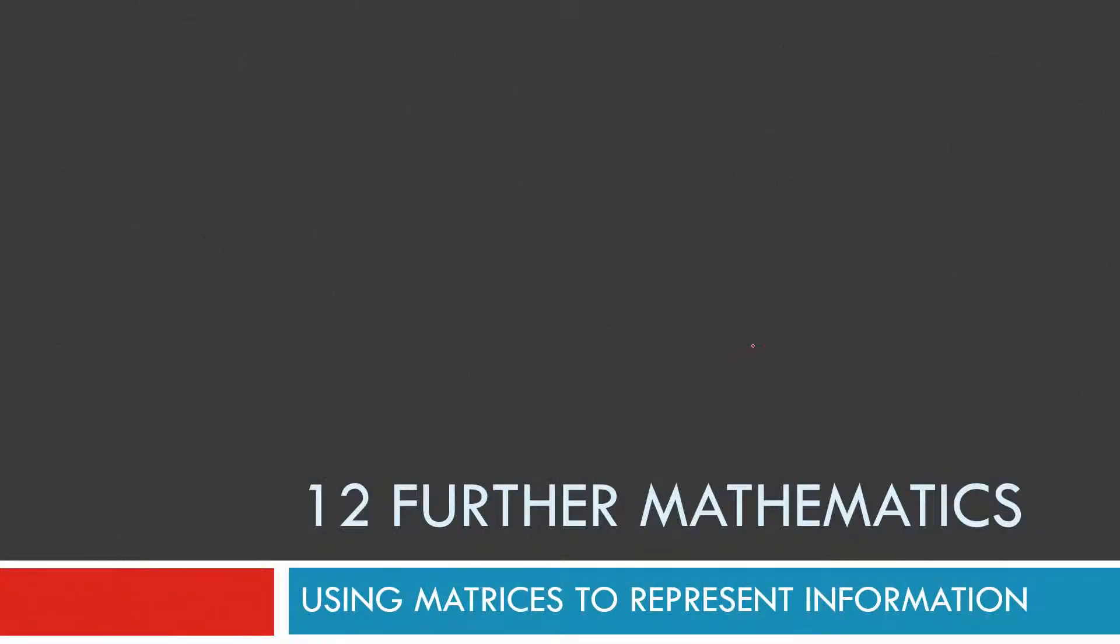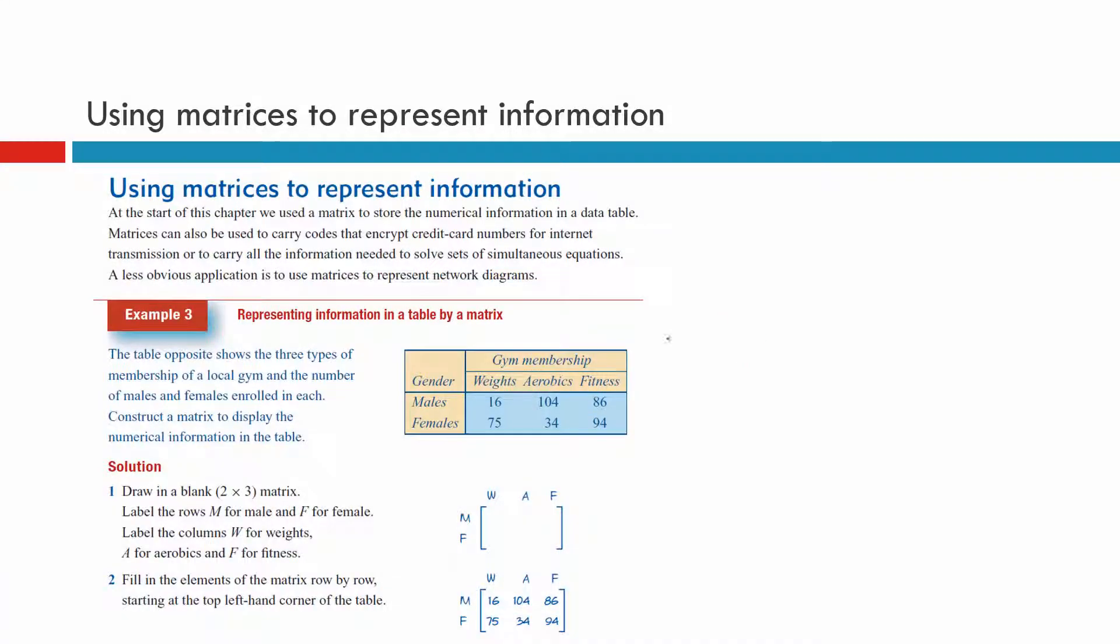Okay, today we're going to use matrices to represent information. There's a number of different ways we can do this, but of course we try and keep things in the same order. Here we have a local gym membership. There's three types of gym memberships that you can get: weights, aerobics, and fitness, and you're either a male or you're a female.